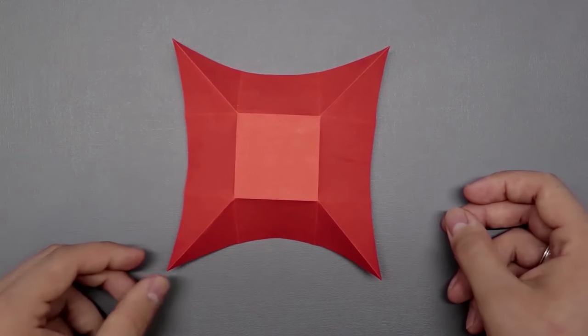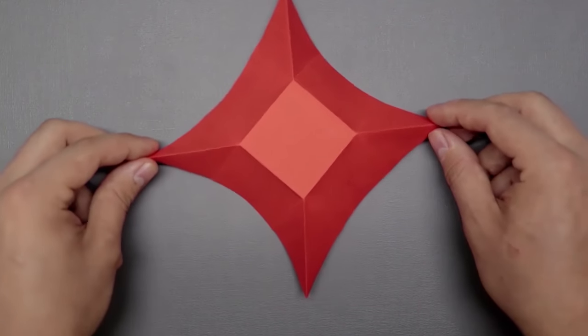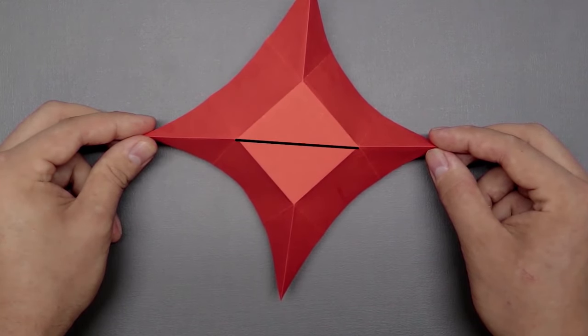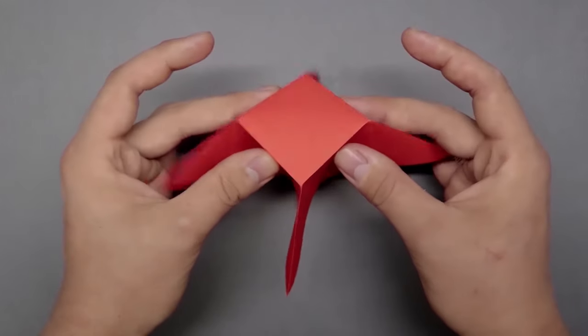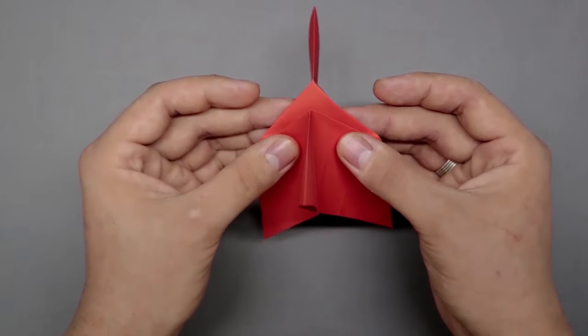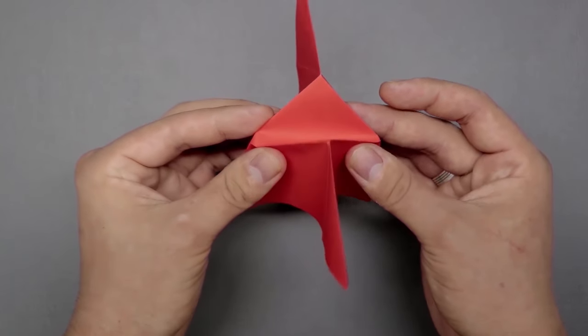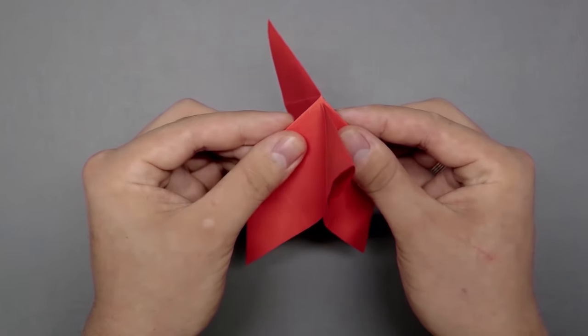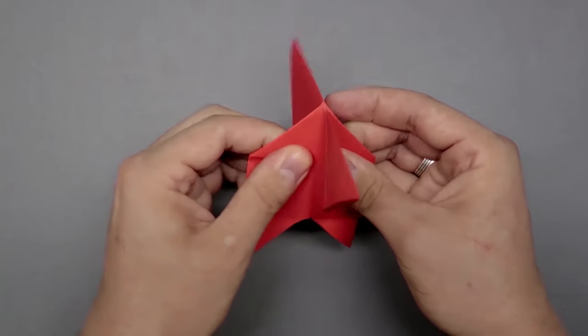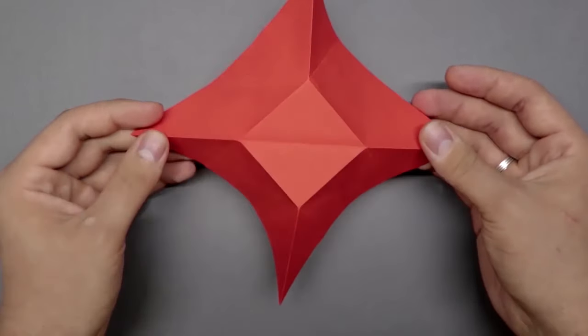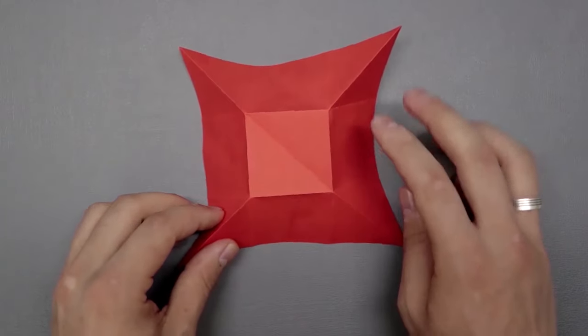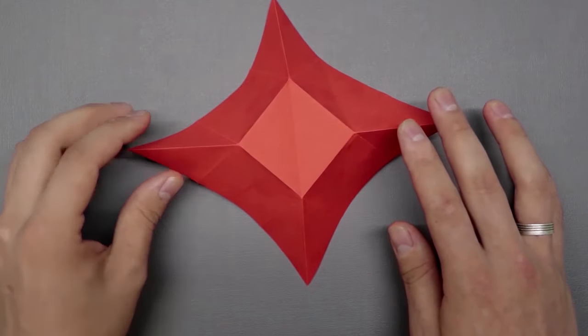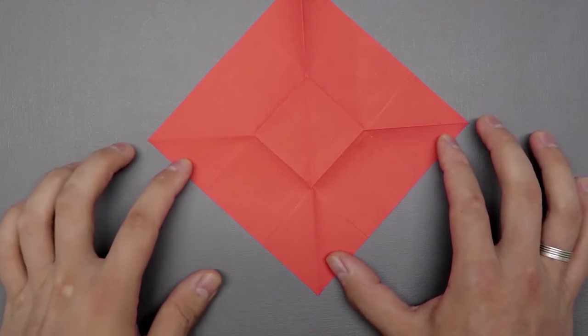Now we also have to fold in half the middle square, but this time taking the middle down. We just have to close, bringing the top and bottom corners up. Once done, let's rotate. And now we have all these creases we can use as a guide.